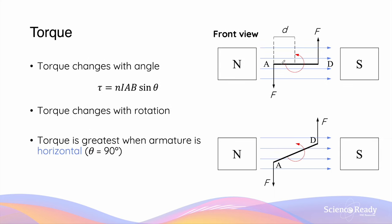As the armature rotates anti-clockwise due to the torque, the angle between the force vectors acting on sides AB and CD and the direction of the magnetic field will change. When the armature is horizontal, it will make a 90 degree angle.